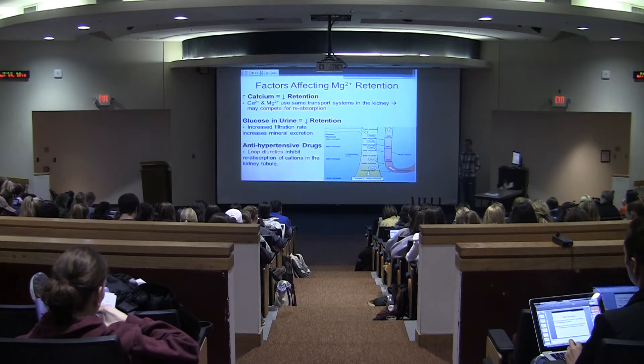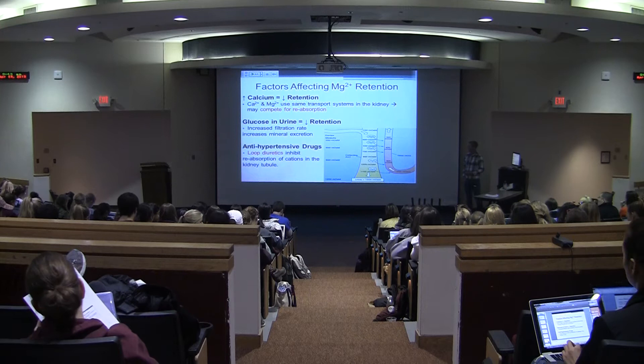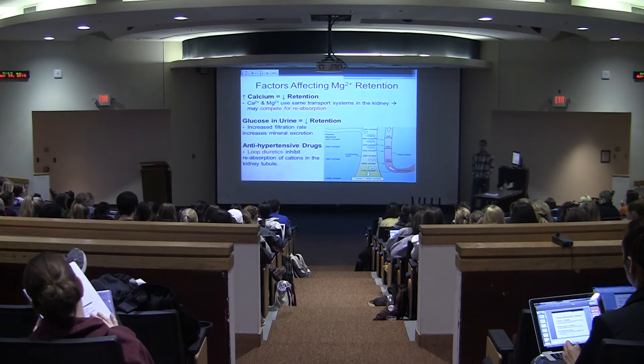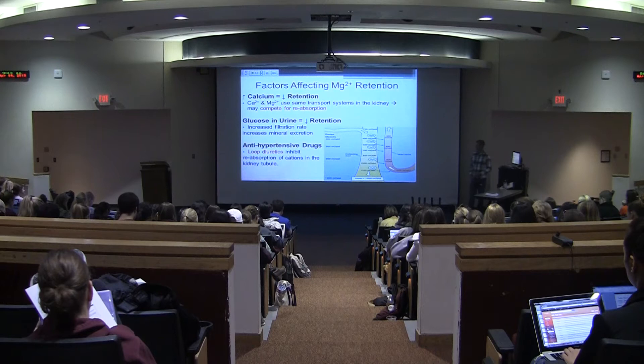Some of the things that can impair magnesium retention in the body and increase excretion include a high calcium intake. We're seeing these effects of calcium and magnesium together because they actually use the same transport systems. TRP-6 can transport both calcium and magnesium within the kidney. So when you have a high calcium intake, it can actually impair absorption of magnesium, especially when you have a low magnesium intake.